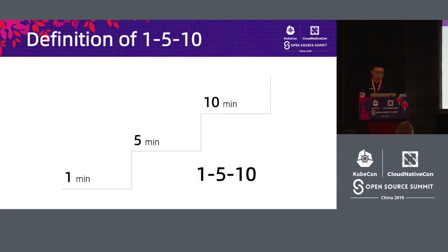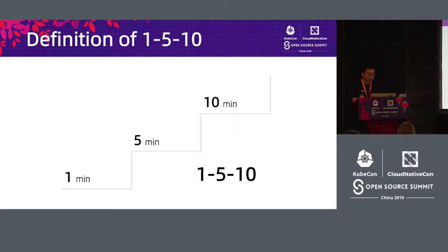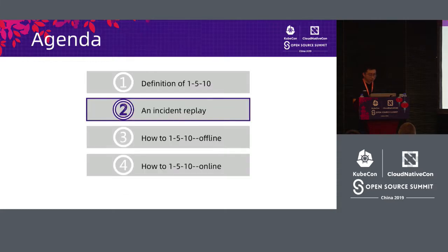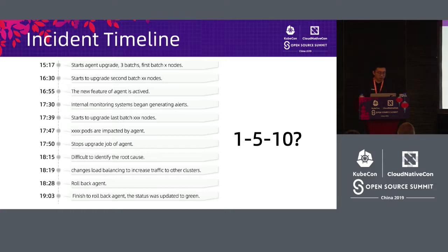We found that 1, 5, and 10 is a relatively good and suitable standard for failure recovery. Once we set this goal, it helps different teams improve capability in terms of failure coverage, reduce the duration and impact of failures, so that the whole project has fewer or no failures. Looking at failures, we can see what mistakes we made and why we didn't achieve the goal of 1, 5, and 10. The incident timeline has had some unrelated information removed.